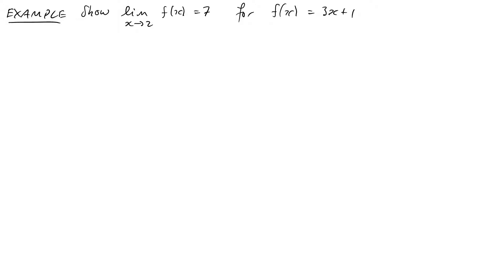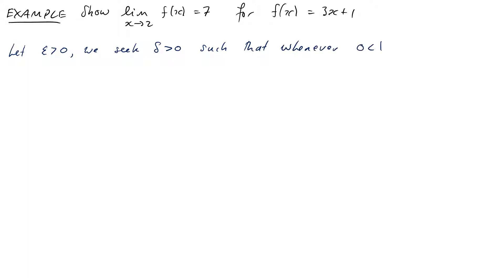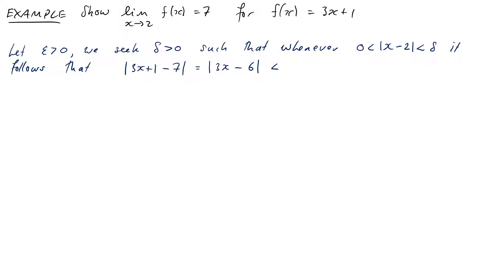To go about doing this we just need to follow the template using our epsilon-delta limit property. It's going to start with: let epsilon be greater than 0, and we seek a delta greater than 0 such that whenever the absolute value of x minus 2 is less than delta, it follows that the absolute value of f(x) — which for us is 3x + 1 — minus the candidate limit value, which simplifies to |3x - 6|, is less than epsilon.